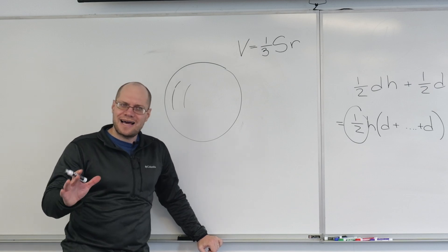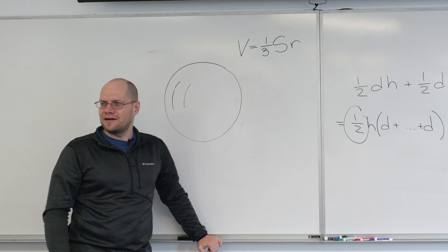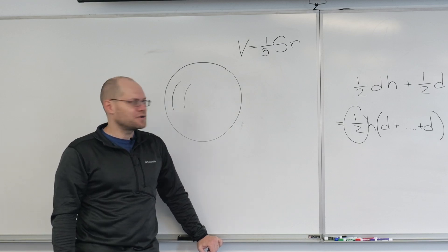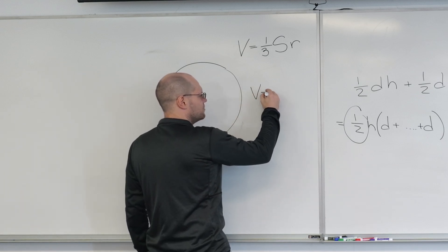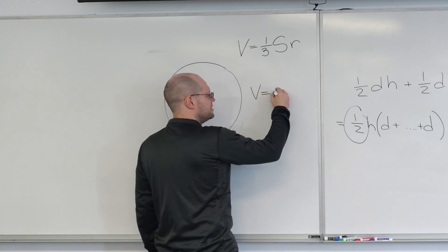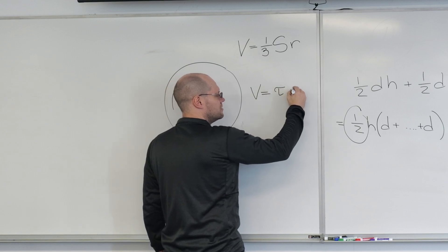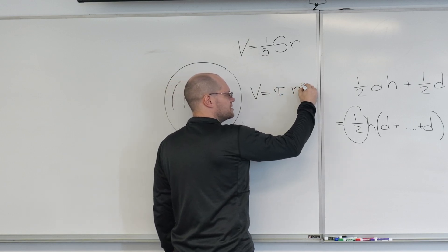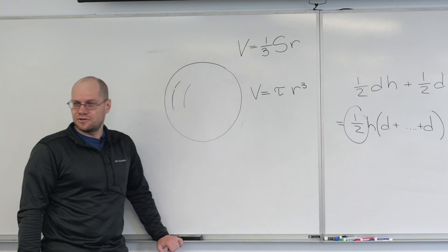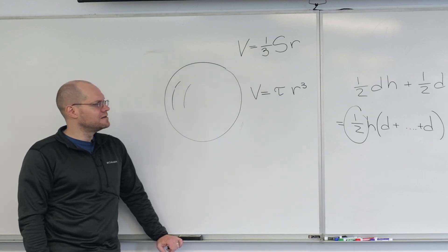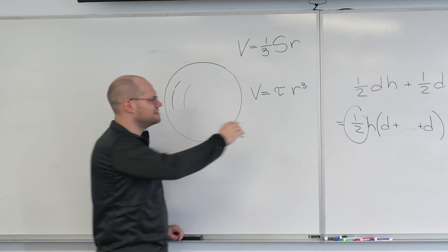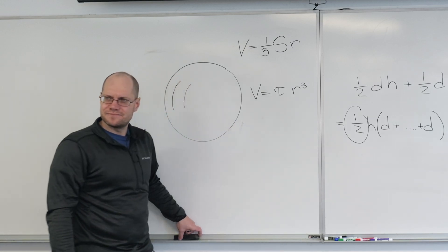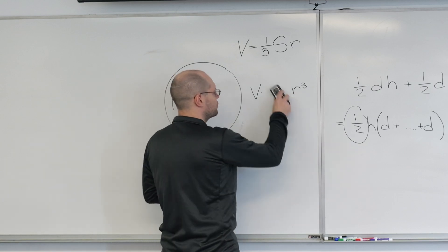Volume will equal some mysterious number τ times R cubed. That becomes clear when you consider cubes and so on. But how does this get the number π? Yes, you know that it's four-thirds π.